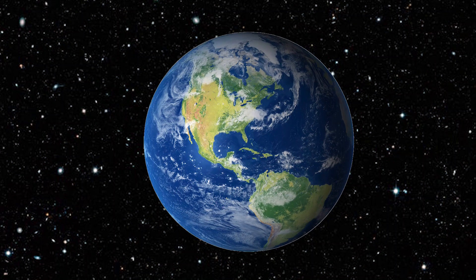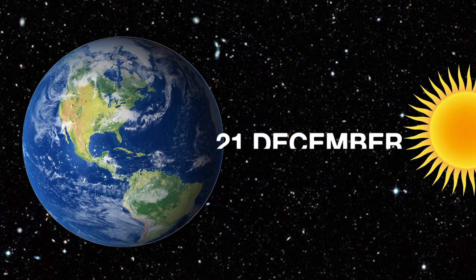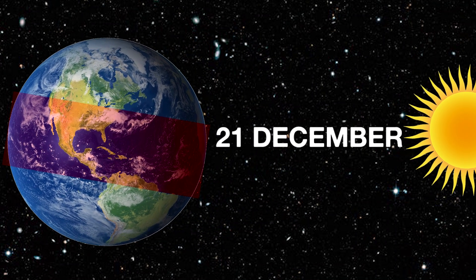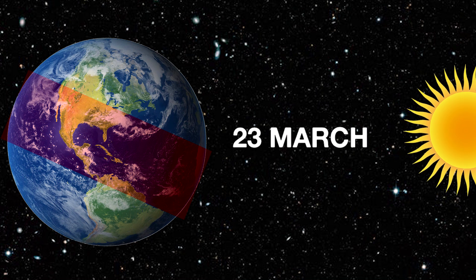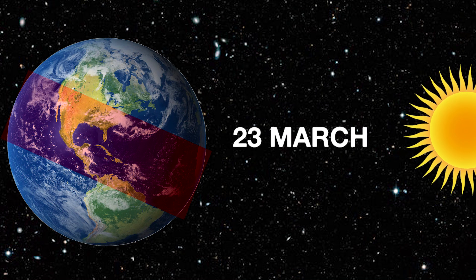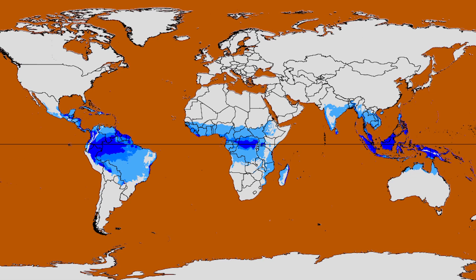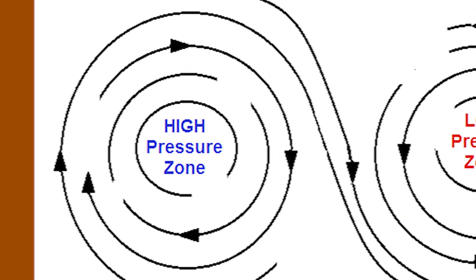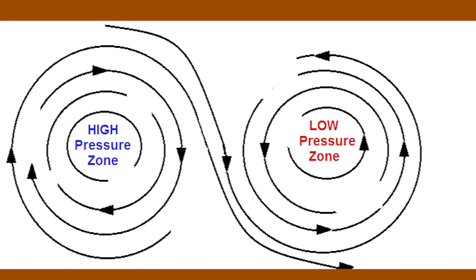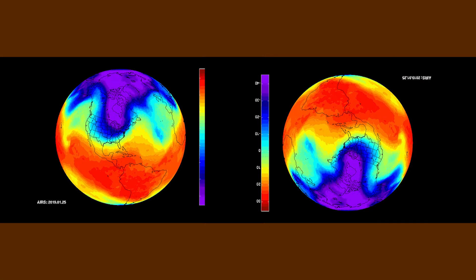Darsaal iska ek geographical reason yeh hai ki 21 December se Earth ka North Pole Suraj ki taraf jhukna shuru kar deta hai. Aur 23 March se tropical region Tropic of Cancer par shift hota hai. Phir yahaan par garmi badhna shuru ho jaati hai, aur isi wajah se air pressure kam hone lagta hai. Hawa hamesha high pressure region se low pressure region mein bahti hai.